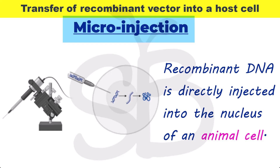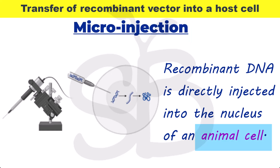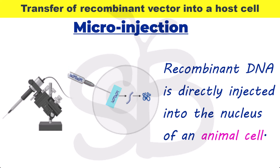Another method is micro-injection. Micro-injection is usually used in animal cells. In this method, the plasmid is directly injected into the nucleus of the cell using a fine needle. This is the micro-injection method and it is used in animal cells.